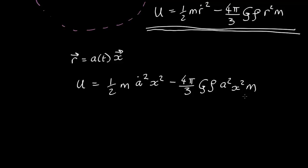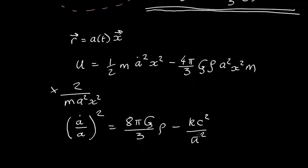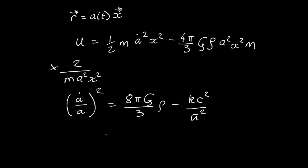We're very close to having our final equation, we're just going to do a bit of rearranging. We're going to multiply both sides by 2 over m a squared x squared and rearrange. I'll leave that as an exercise for you, but if you do that you end up with the classical Friedman equation which tells you that a dot over a squared equals 8 pi G over 3 times the density minus k c squared over a squared. Now what's this k? k is where we've bundled up all the constants we don't care about, so k equals minus 2u over m c squared x squared.